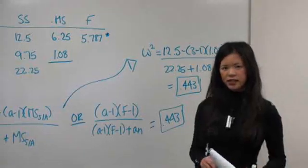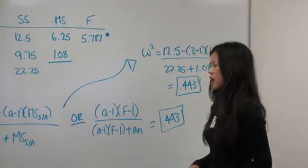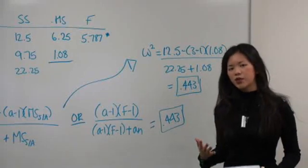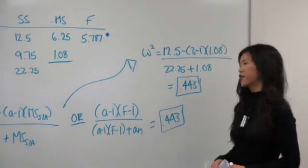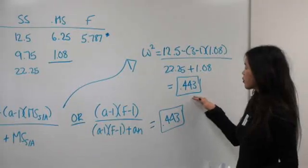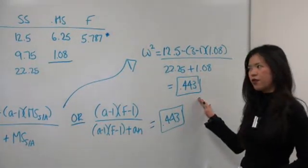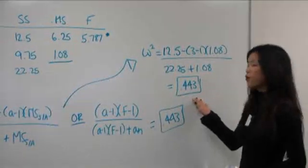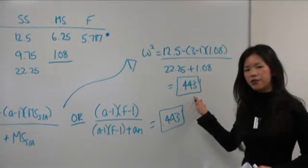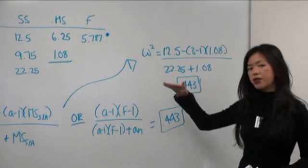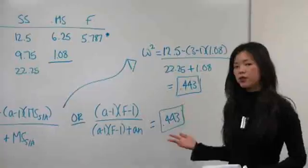Now, to interpret effect size, it's really arbitrary cutoffs. A lot of people have different ways of interpreting effect size, so you might want to check with your professor or your textbook. But generally, this would mean that 44% of the variance in our study is accounted for by the groups, meaning between group variance.